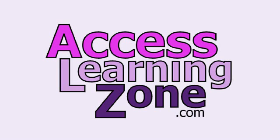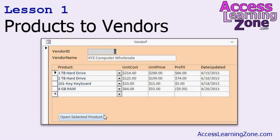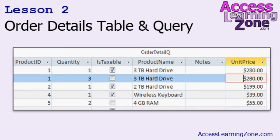Now let's take a closer look at exactly what's covered in today's class. In the last class, Access Expert 7, we built a form with a subform so we could see the product and all of the vendors we purchased that product from. Our homework for today was to reverse that — to build a vendor form where we can see all of the products that vendor supplies. In lesson one, we'll review my solution for the homework and learn a few new things as well. In lesson two, we're going to do some more work on our order entry system — we're going to create a table to track line items called the order details table and a query to go with it.